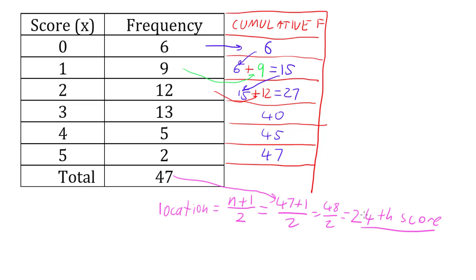So twenty-four is not my median, it's just where my median is. So I now use this number with my cumulative frequency to find what my median is. And I do that simply by working my way down the cumulative frequency until I find the first number that is bigger than that number. So I'm looking for twenty-four, the first number bigger than twenty-four is twenty-seven.